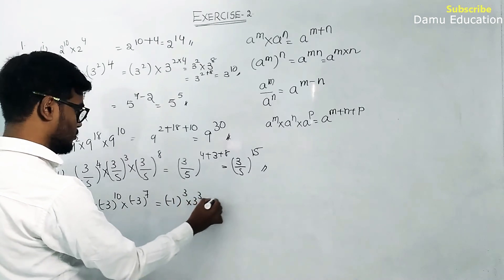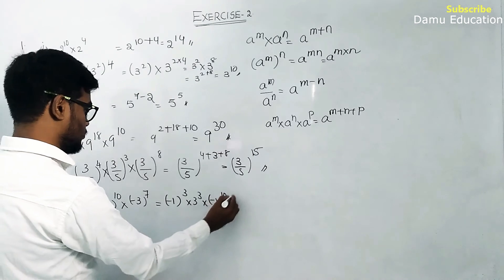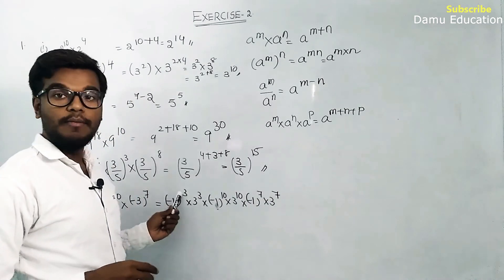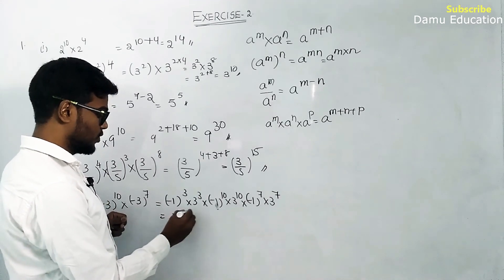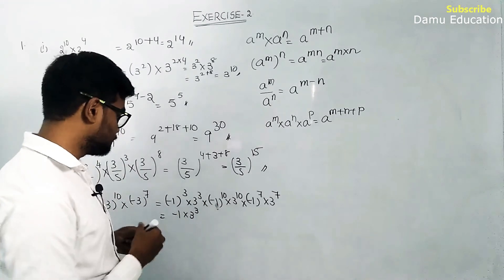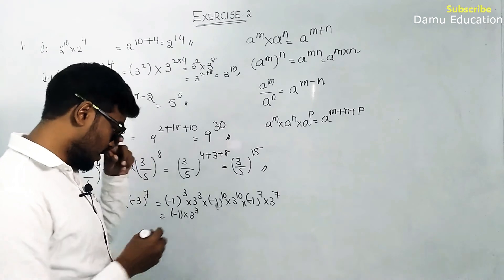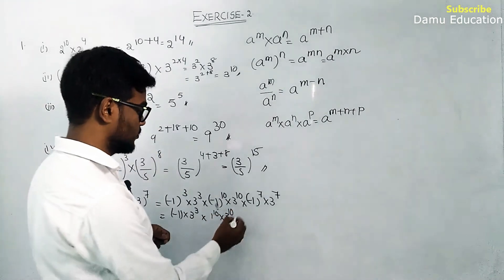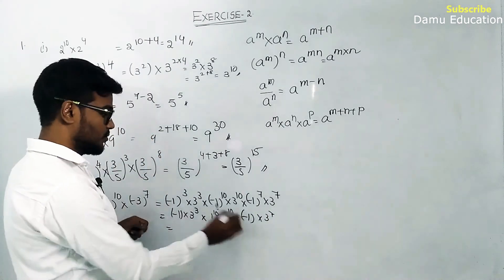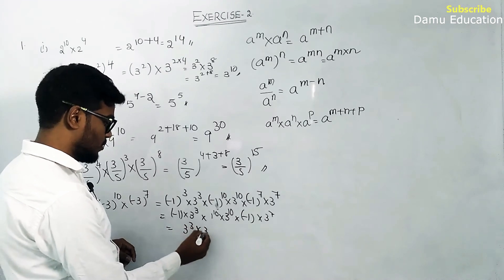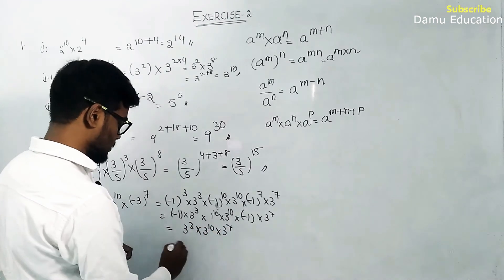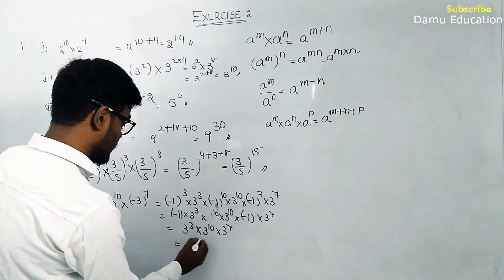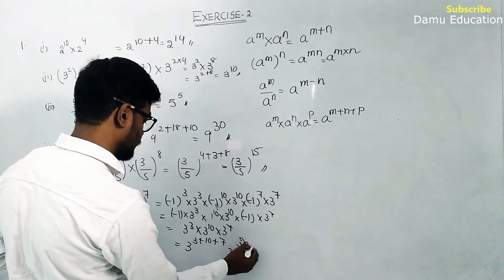So we get minus 1 whole power 3 into 3 power 3, into minus 1 whole power 10 into 3 power 10, into minus 1 whole power 7 into 3 power 7. Odd powers give minus 1, even powers give plus. Minus into minus becomes plus, so 3 cube into 3 power 10 into 3 power 7. Adding powers: 3 plus 10 plus 7 equals 3 power 20.